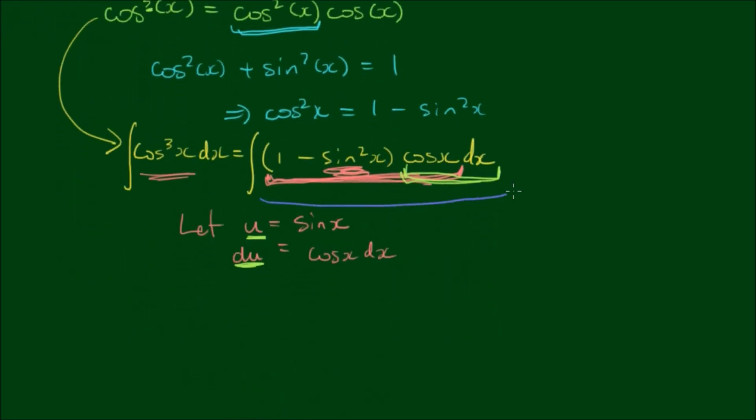Let's rewrite this right-hand integral. We have the integral of 1 minus sine squared x times cos x dx. If we make the substitutions, this equals the integral of 1 minus u squared du, substituting u for sine x and du for cos x dx.